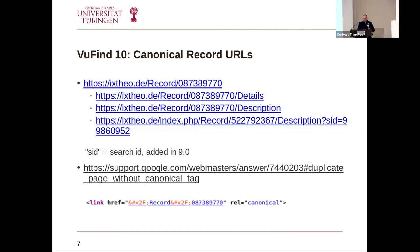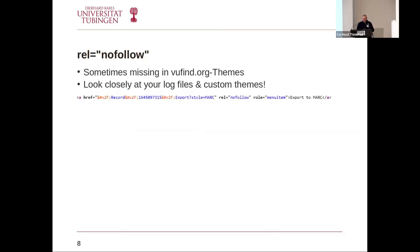One thing that is still somewhat problematic is the session ID (sid) that came in around version 9.0, added for navigation within search results so you can click previous or next on a record. Bots crawl the search results and could crawl the same record over and over because of different sids — however, now they know it belongs to the same canonical page.